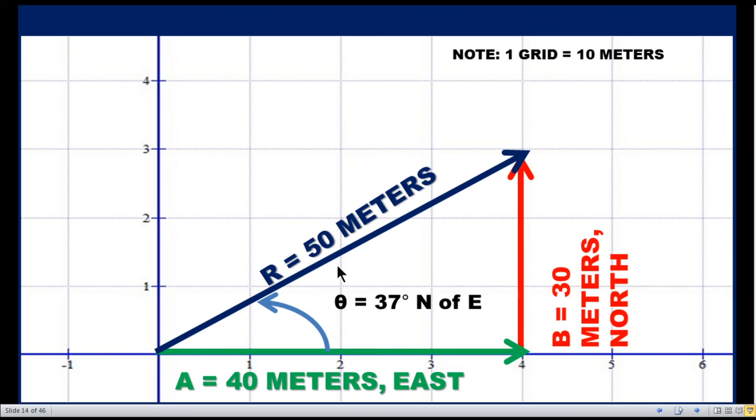So this is the graphical method to find out the vector addition or to find out the resultant vector. Like a polygon, like a triangle, like a parallelogram law to find out the resultant vector. We can use the protractor and a ruler.